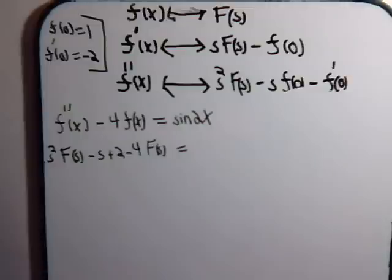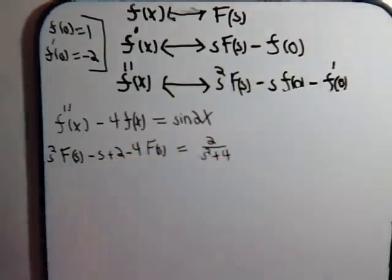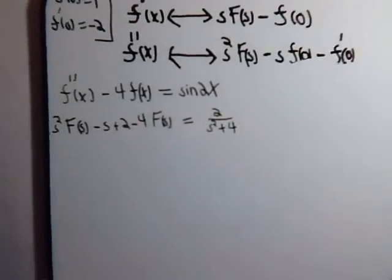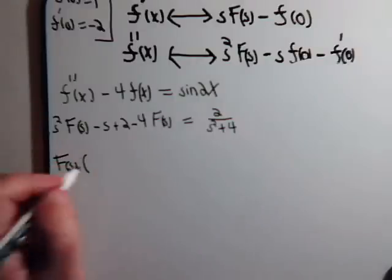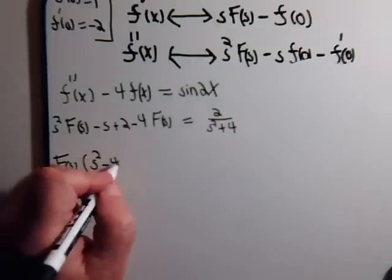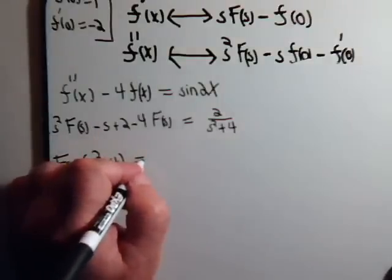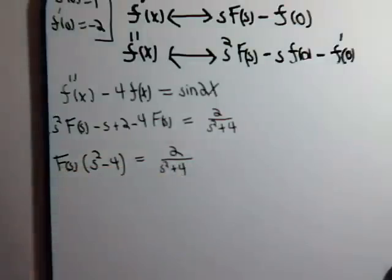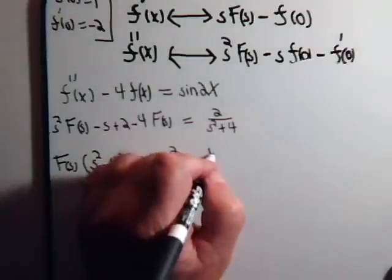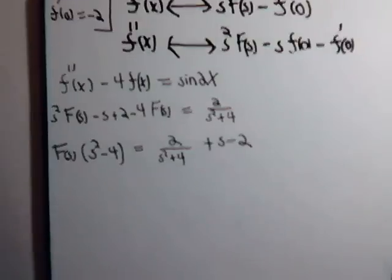And that has to be equal to the Laplace transform of the sine of 2x. And that's 2 divided by s squared plus 4. So over here we have f of s times s squared minus 4. And let's bring these terms over to this side.